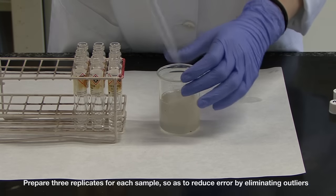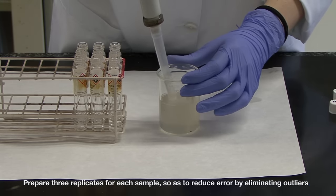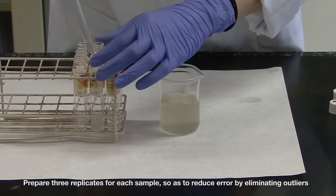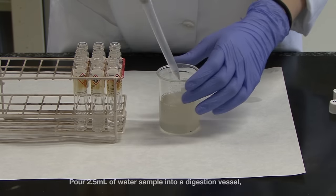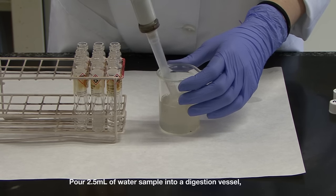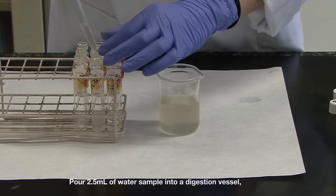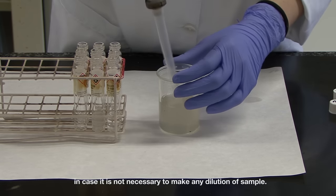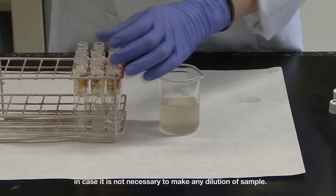Prepare 3 replicates for each sample, so as to reduce error by eliminating outliers. Pour 2.5 ml of water samples into a digestion vessel, in case it is not necessary to make any dilutions of sample.